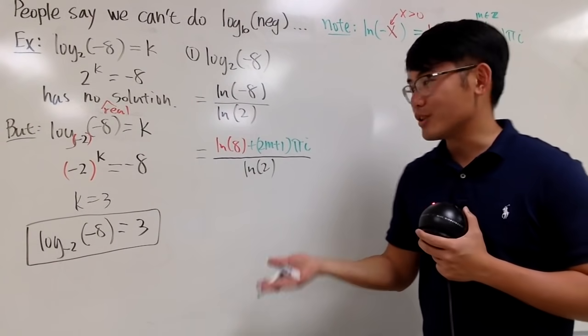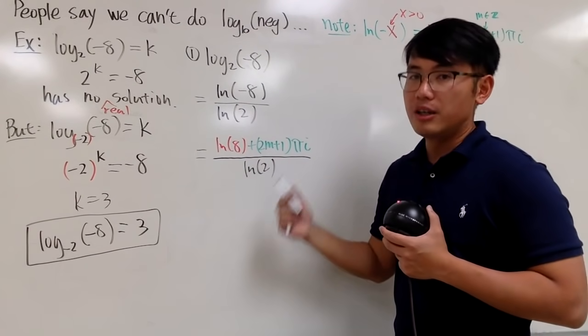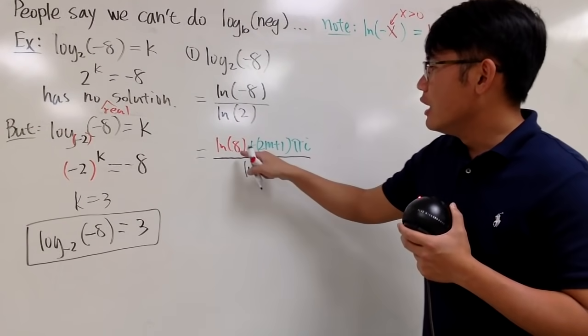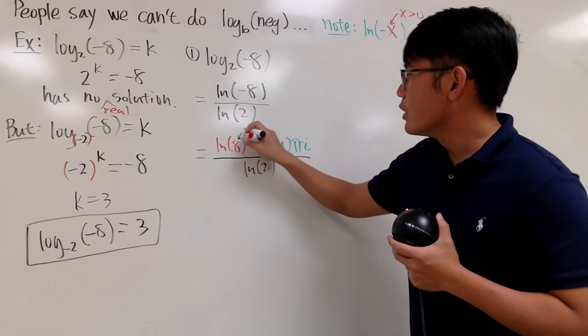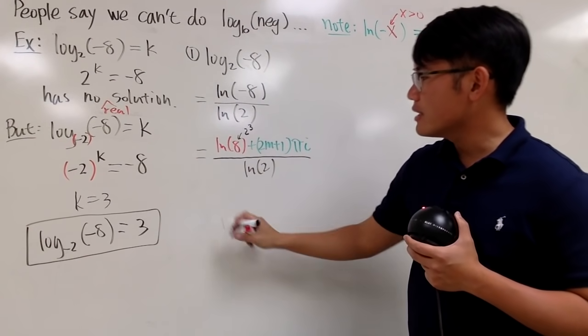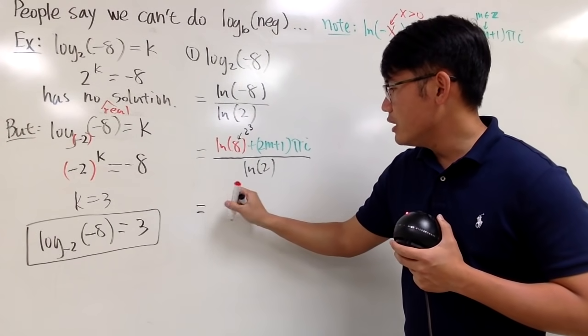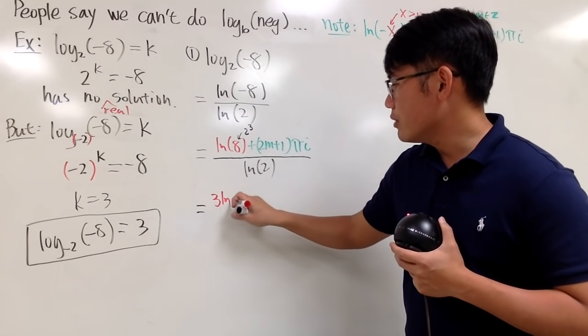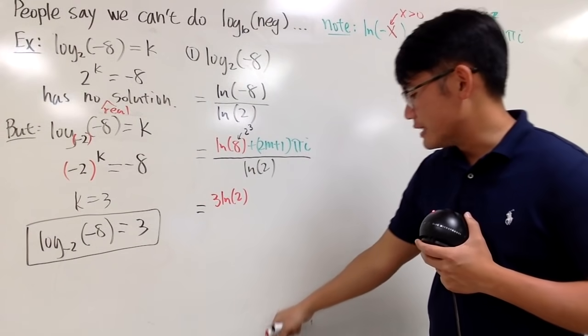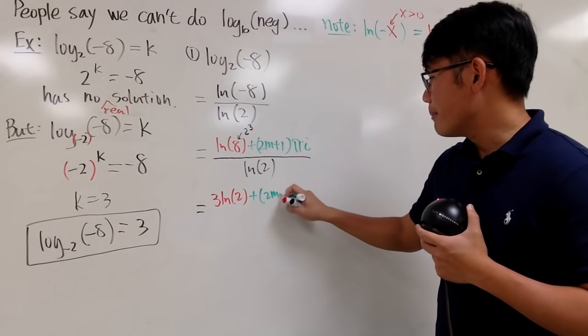So, you have the complex solutions for that. And of course, we can actually simplify this a little bit. Because for example, 8 is the same as saying 2 to the 3rd power. And just as usual, we can bring the power to the front. So, we can look at this part as 3, natural log of 2. And then, of course, we have this part.